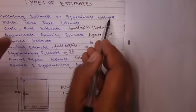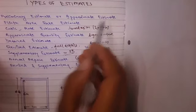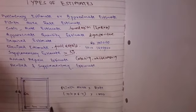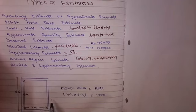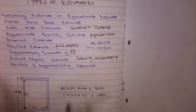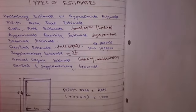Preliminary or approximate estimate: in this, per unit cost is calculated. Plinth area: you understand this by this diagram. Okay, so thank you everyone.